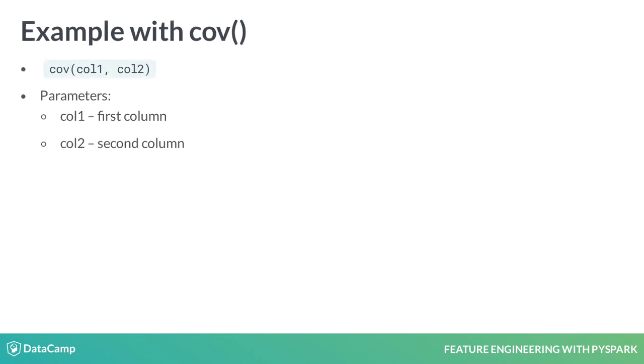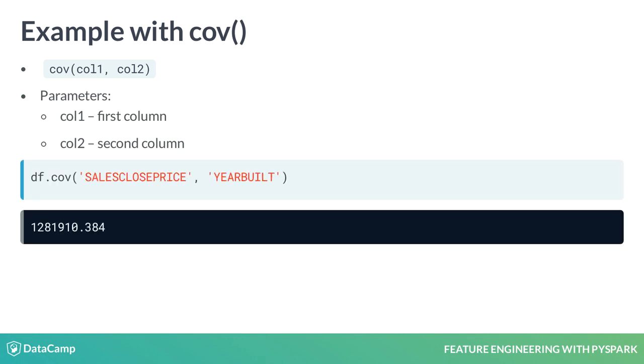Covariance is a function that lets us see how two variables vary together. This function is applied to a data frame and takes two numeric columns and returns a value.